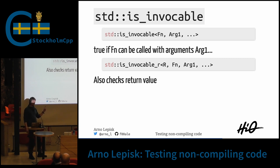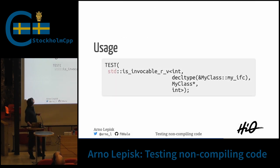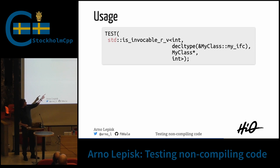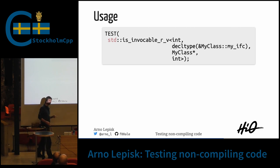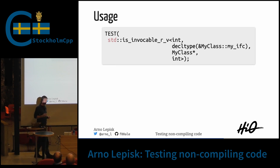This is C++17. It's more or less possible to create something like this in C++14 with some digging. How do we use it? We can check — this is the happy case first — this should work. We can call the MyIFC method of MyClass with an int and it will return an int or something convertible to int. We take a decltype of the function pointer to a class, and push the class pointer as the this pointer.